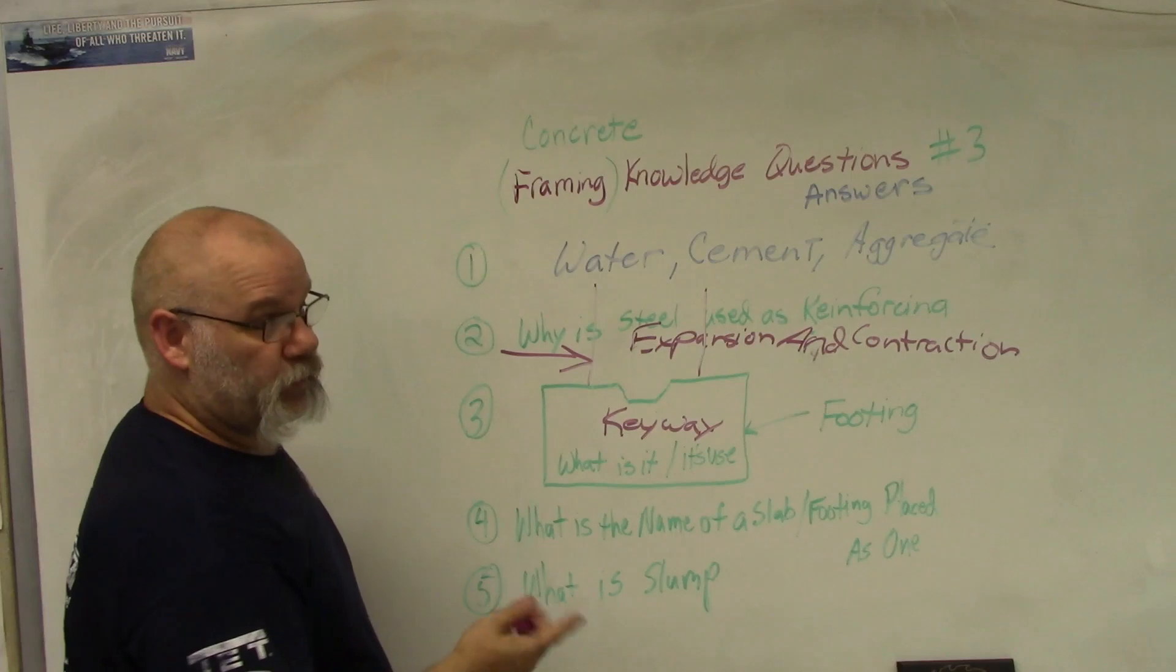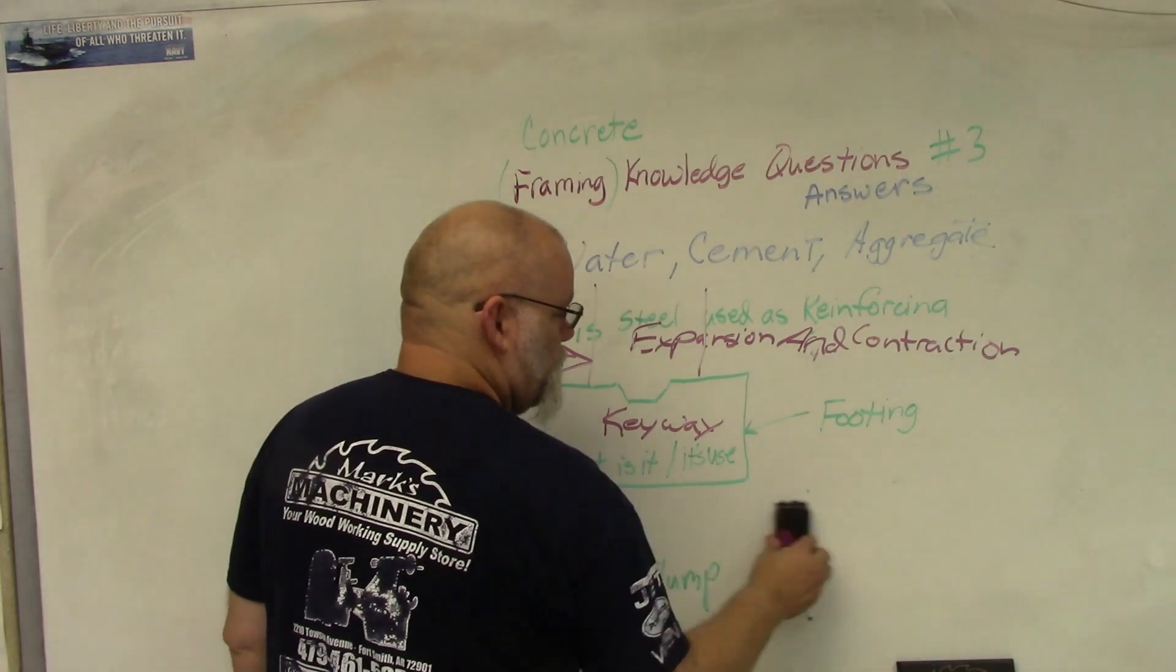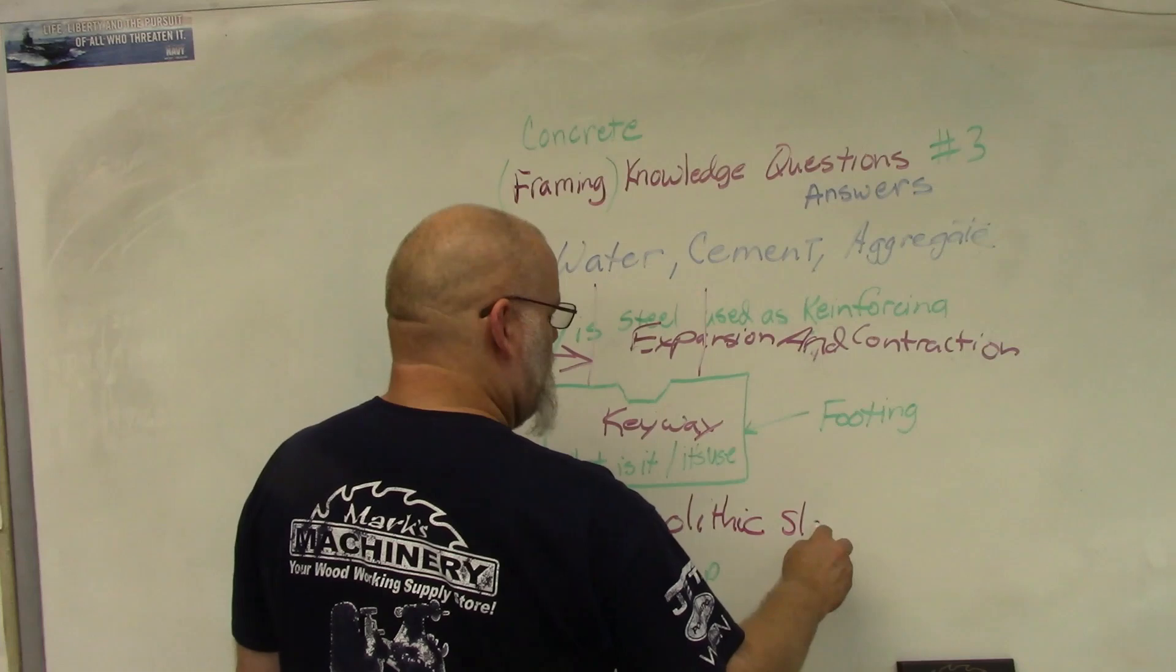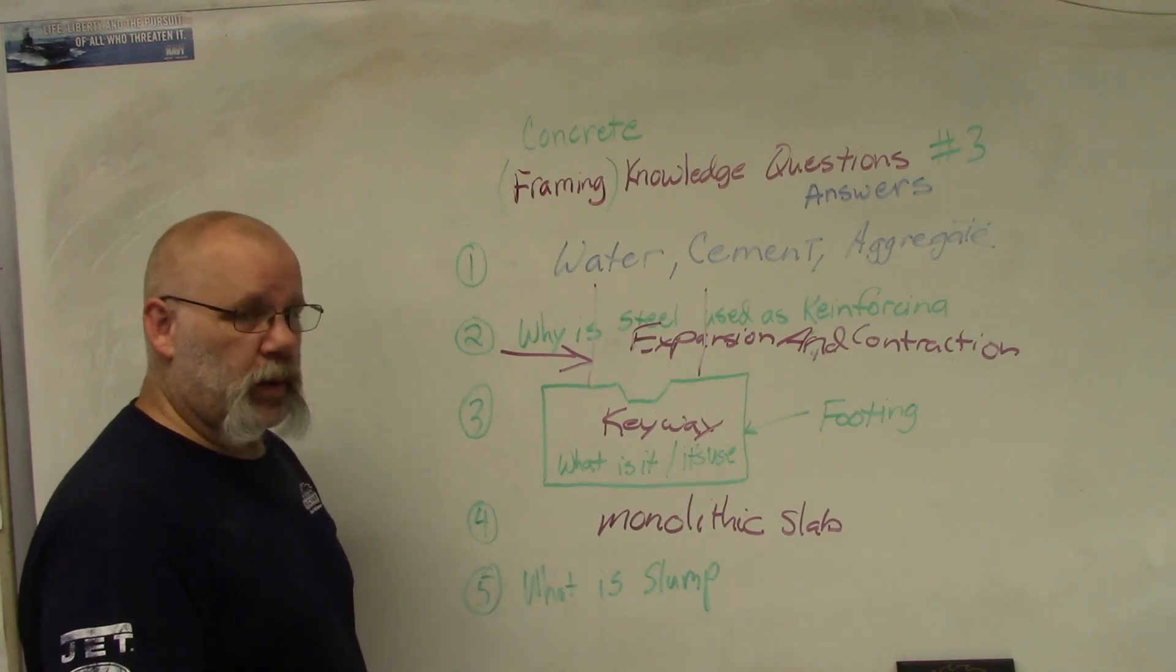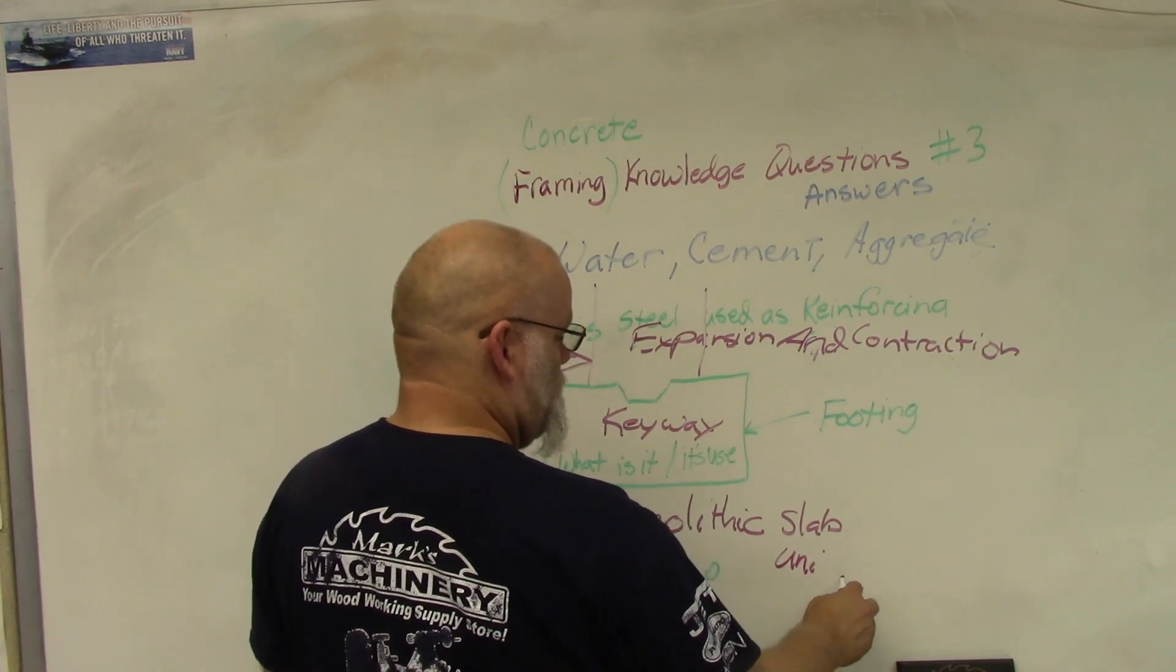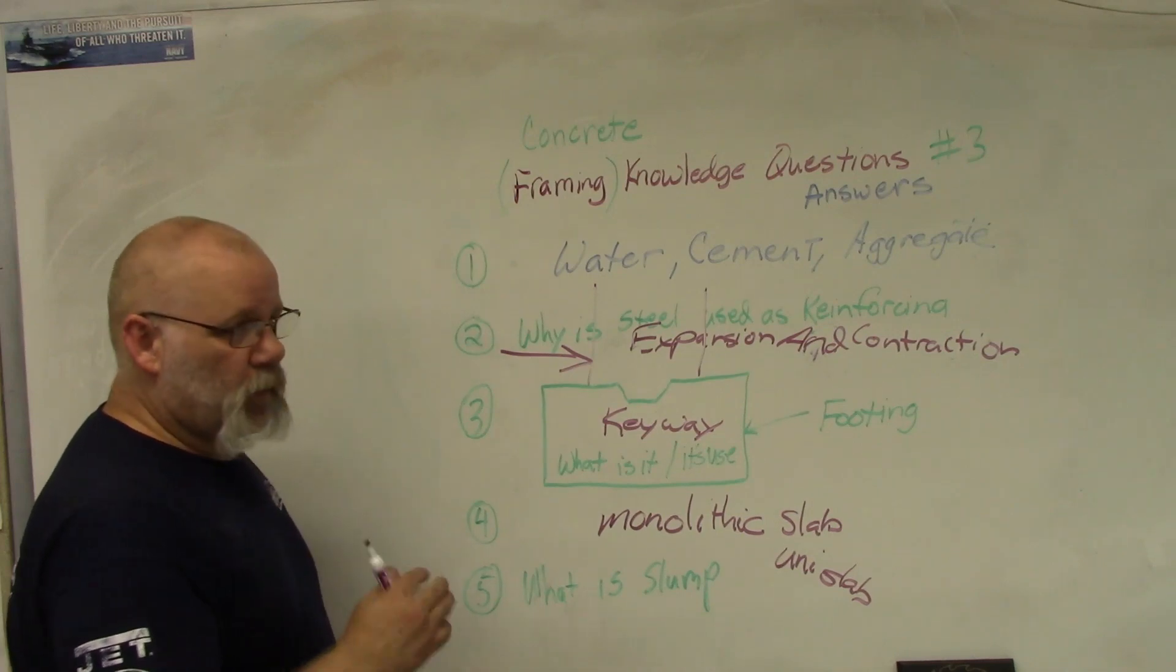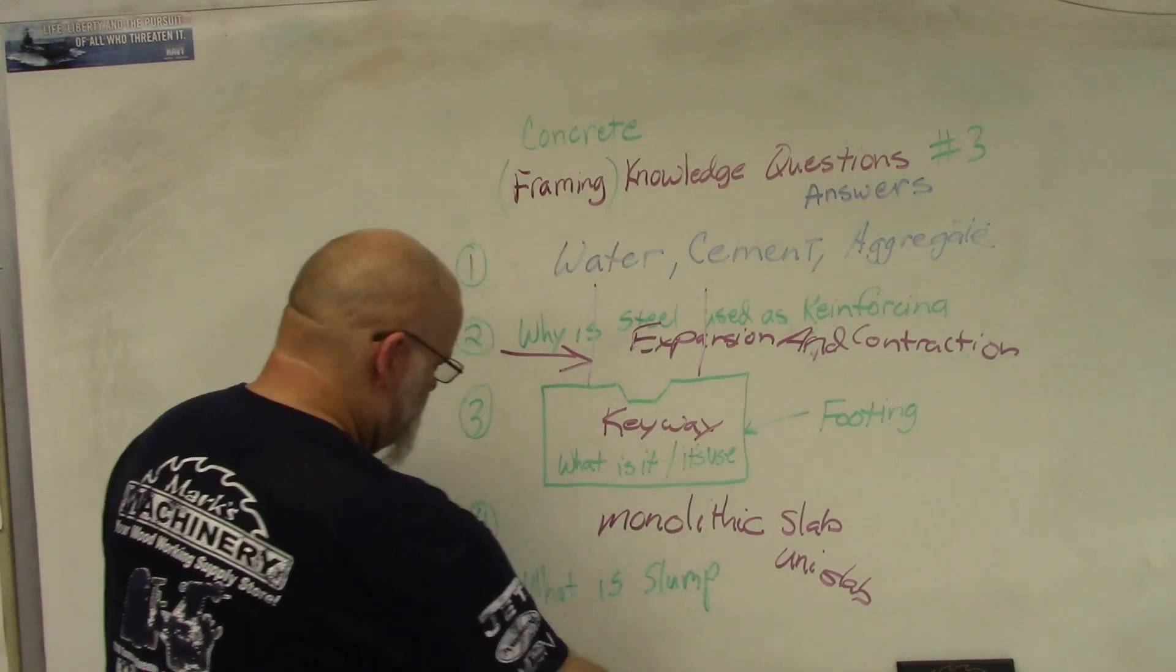Number four: what is the name of the slab or footing if it's done all at once? That would be a monolithic slab. Monolithic slab - mono meaning one, so it's poured all as one. Some people will call it a uni slab - uni again meaning one. So it's either monolithic slab or uni slab. A lot of people will call it a slab on grade, but it's all poured as one.